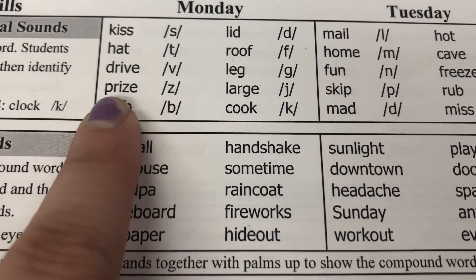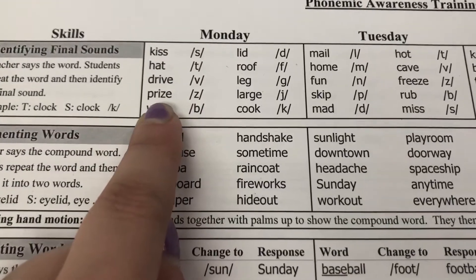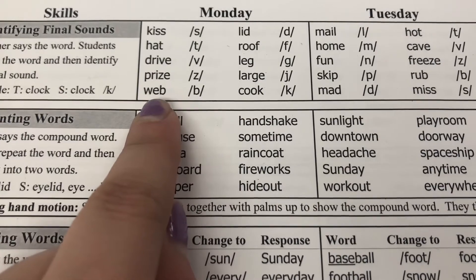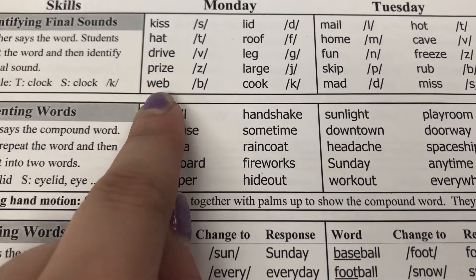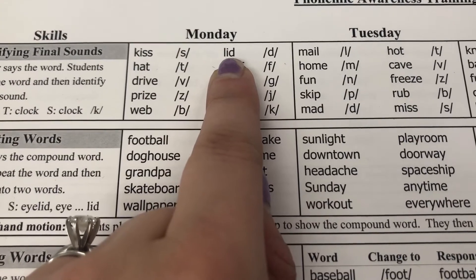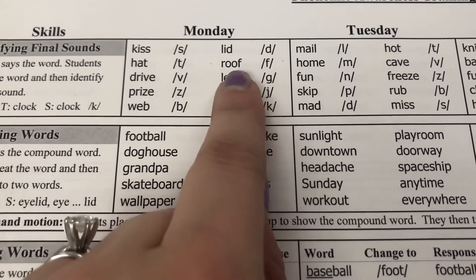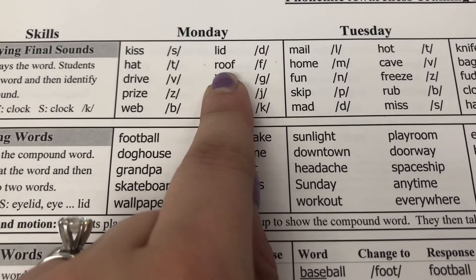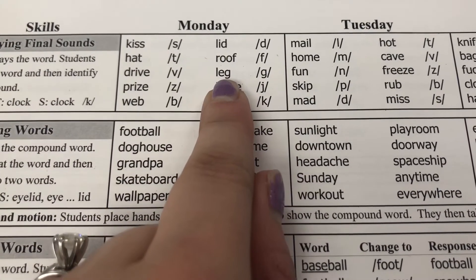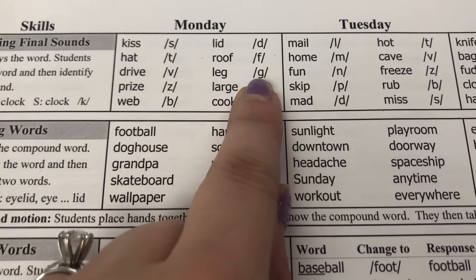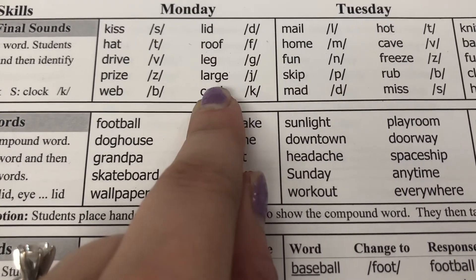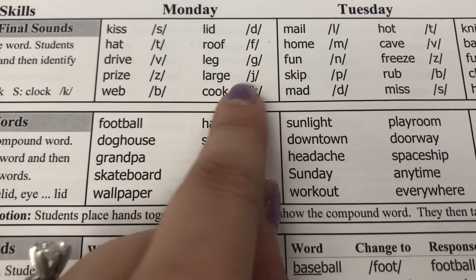Prize — Z. Web — B. Lid — D. Roof — F. Leg — G. Large — J. Cook.